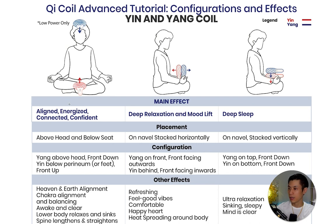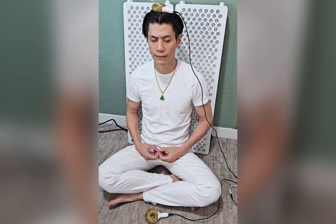The first configuration is my favorite: aligned, energized, connected, and confident. Before using this one, make sure you're using low power only — around 20 to 30% — because it involves putting the yang coil on top of your head, and your brain is very sensitive to electromagnetic fields. Place the yang coil facing downwards on top of your head, and the yin coil facing upwards below your seat. If you're lying down, place one at your head and one at your feet. If you're sitting, place the yin facing up on the seat and the yang on your head.